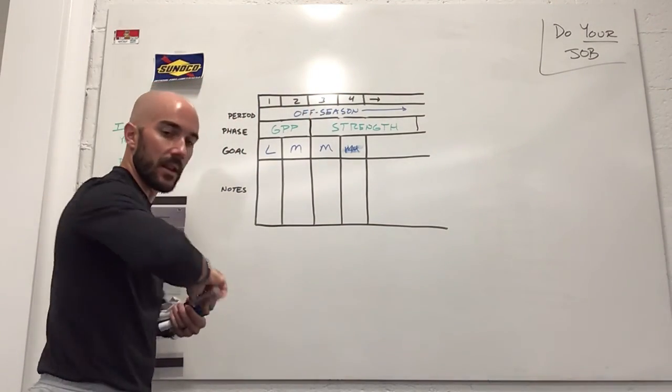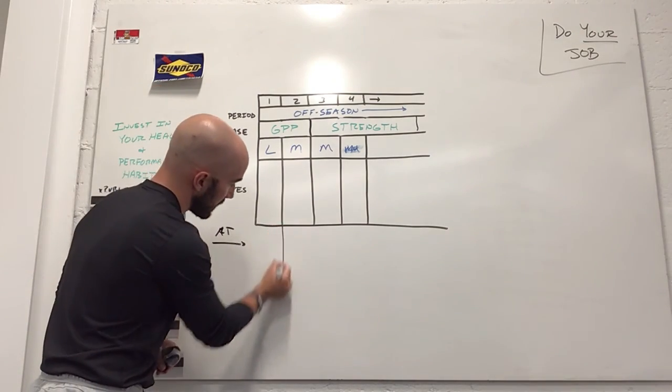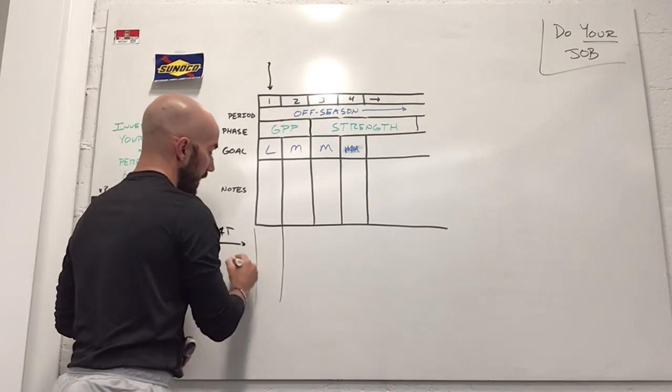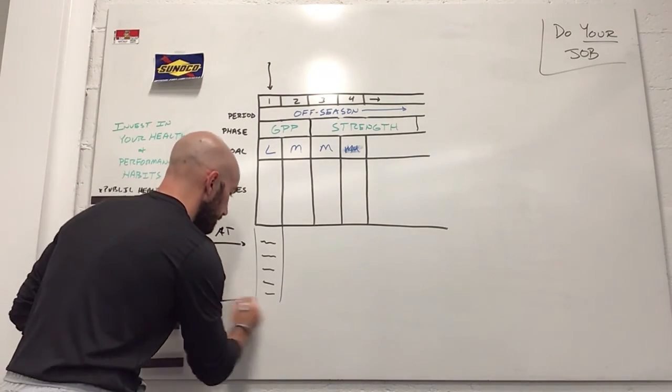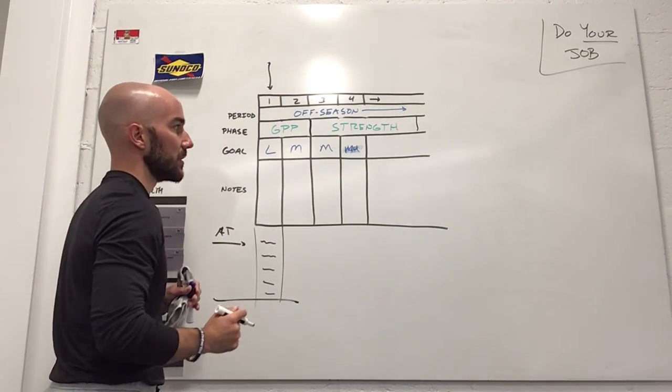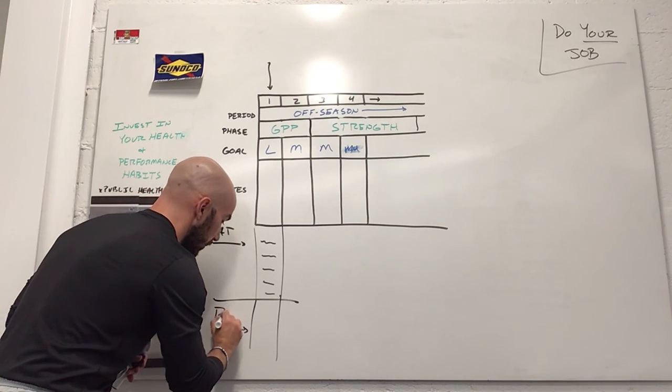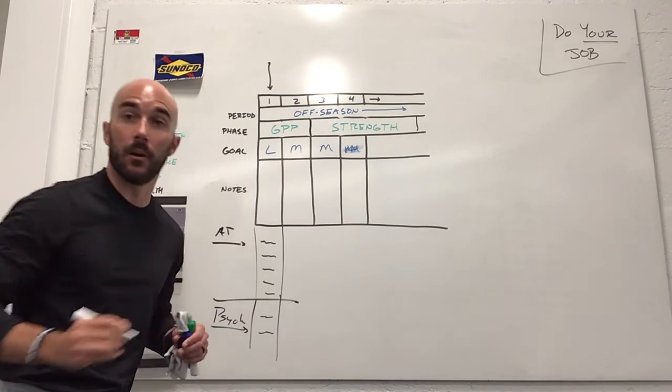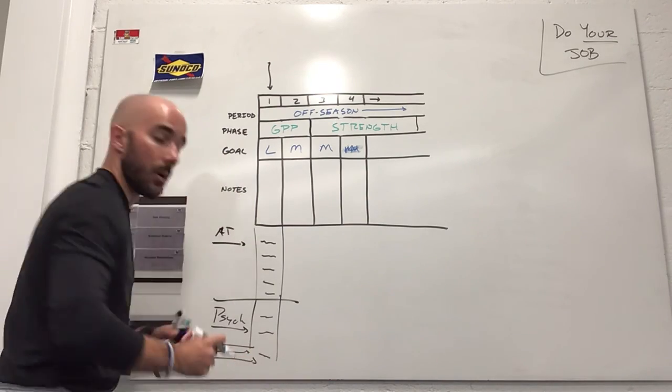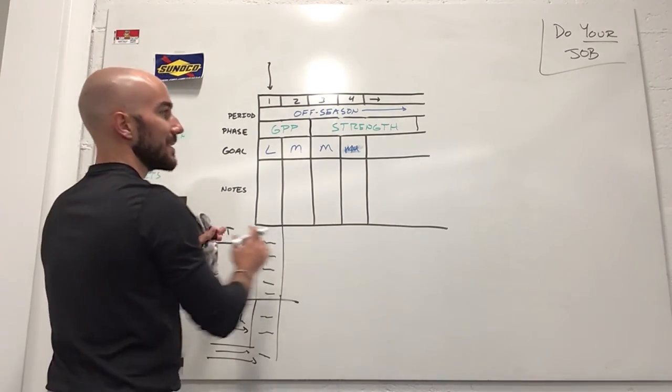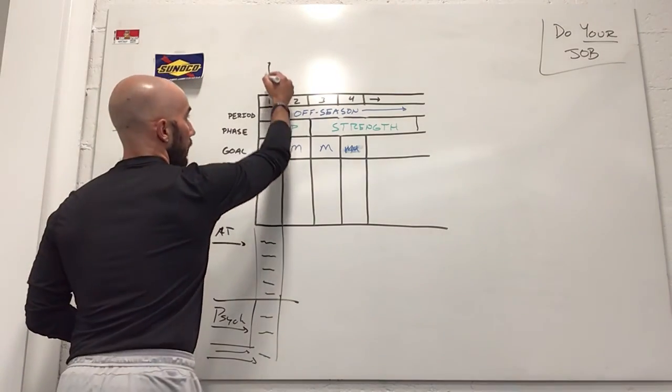So down here, maybe if you're meeting together as a staff, athletic training puts their programming in here. As this first week continues to go down, athletic training has opportunity to put their information about injuries, rehabilitation, return to play. Your strength staff has the ability to do it up here. Sport coaches come up here. If you're working with other professionals like sports psych, maybe their programming could come into this period right here. If you're working with other specialized departments, they basically have a row.